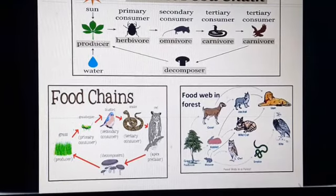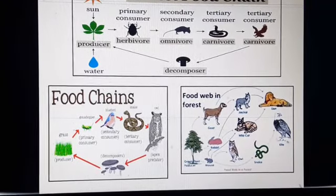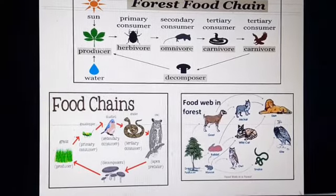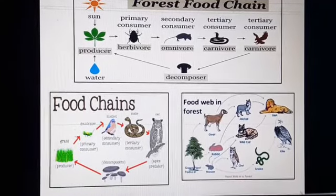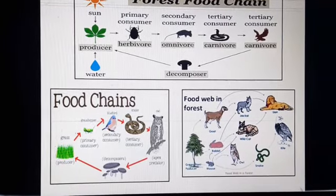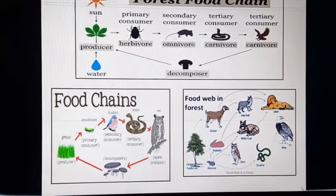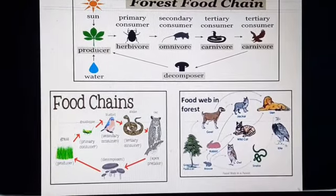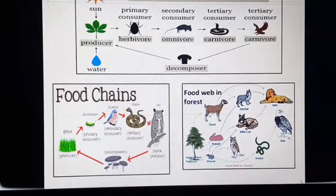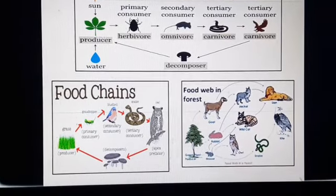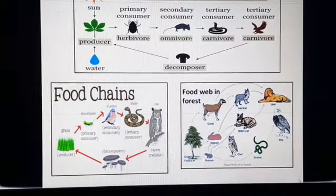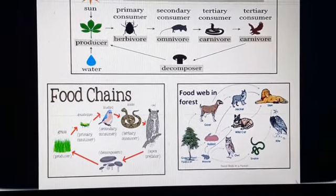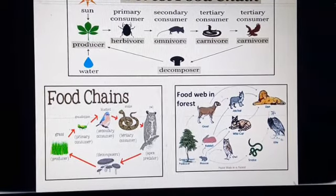Finally, the snake may be eaten by an eagle. That is a common food chain occurring in a forest habitat. When those top carnivores like the eagle die, decomposers act on them and convert them into humus, which is again provided as nutrients to plants. Many different food chains can be found in a forest, and all are interlinked to form a food web, as shown in the photograph.